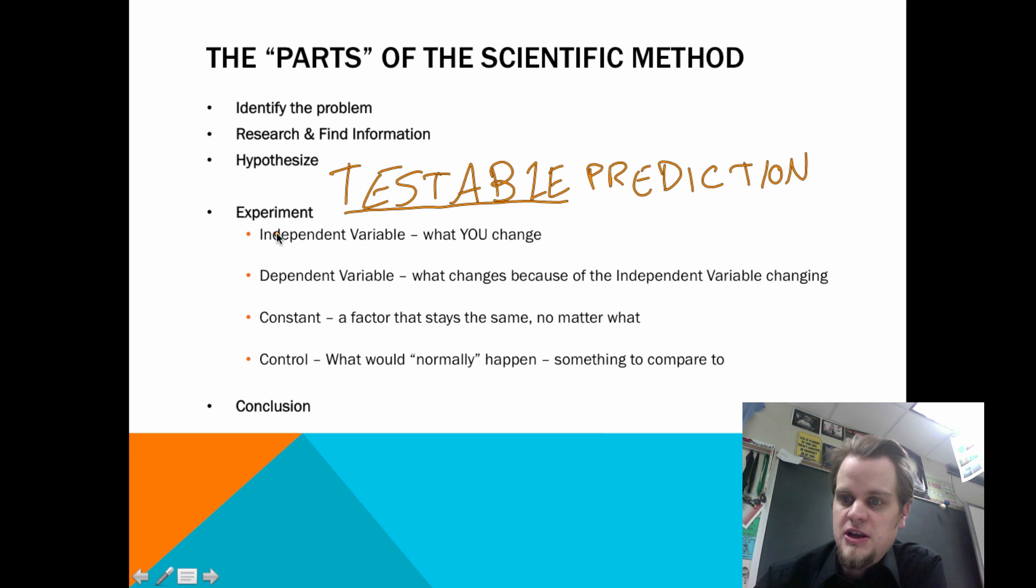So then we talk about the experiment. Now the experiment is the fun part, as most people think about. The independent variable is the thing that you change. It's independent of anything else, it's what you change. That would be like your parents. Your parents are independent. Let me explain that in the next part. See, a dependent variable is what changes because of the independent variable changing. You are dependent. You are dependent on your parents. That's why it's dependent. It changes because of something else. Whereas things that are independent don't change because of other things. You are dependent on your parents providing you resources.